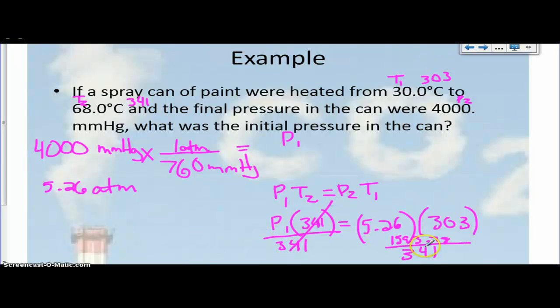So, you get P1 equals, and when we put that in the calculator, we get 4.67, and remember our units for pressure were atmospheres, and we got 3 sig figs, and that's the least number up here, so we're good, and that's how you do a Gay-Lussac problem.